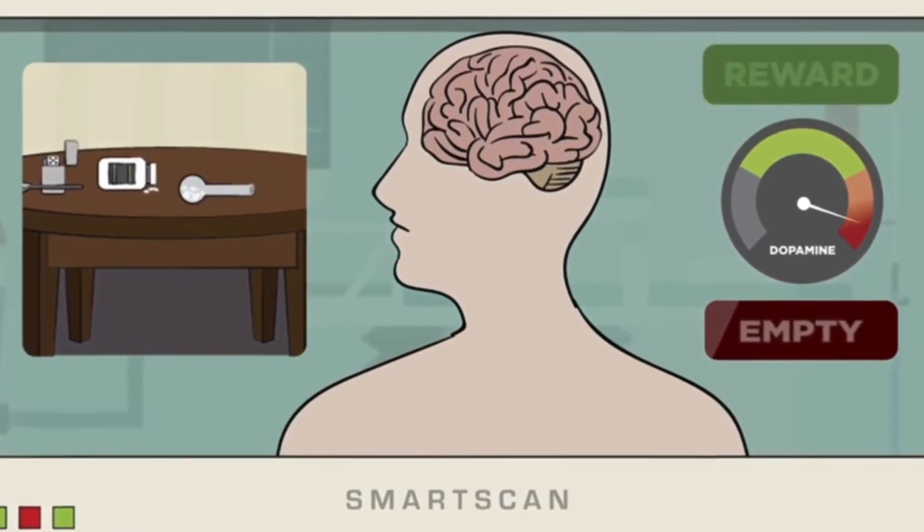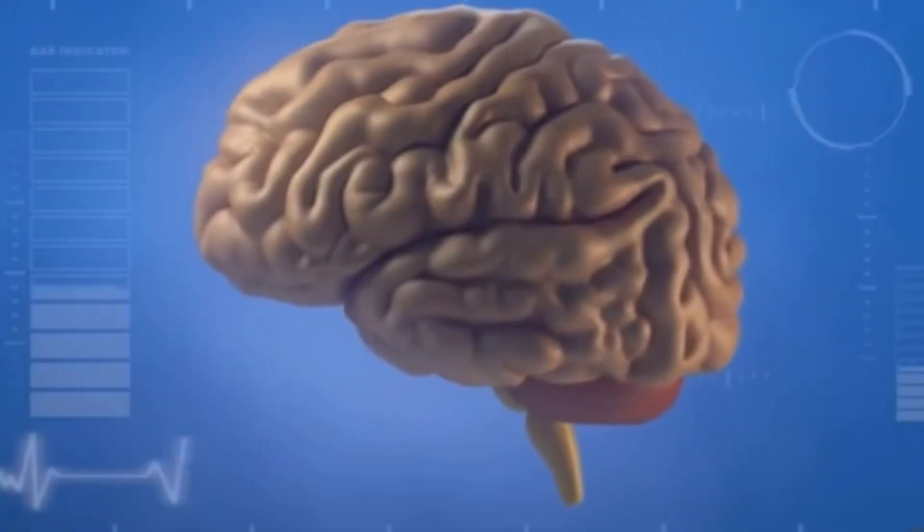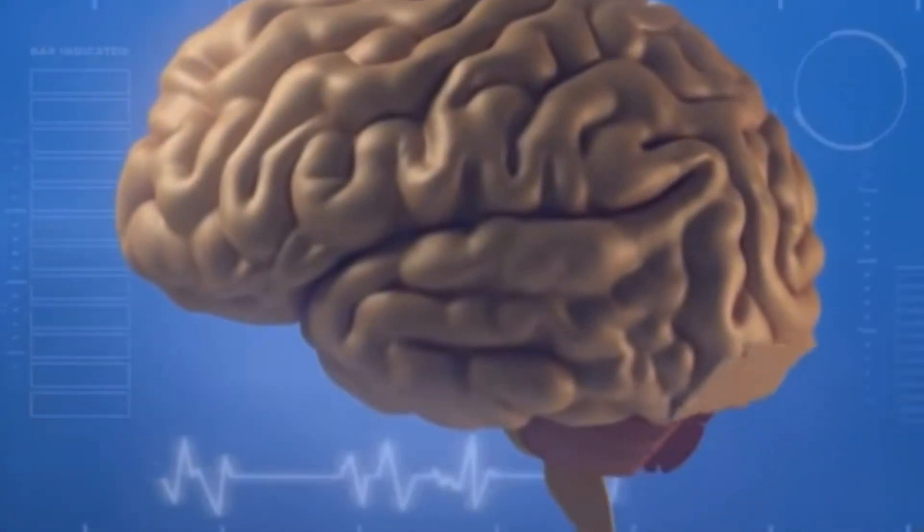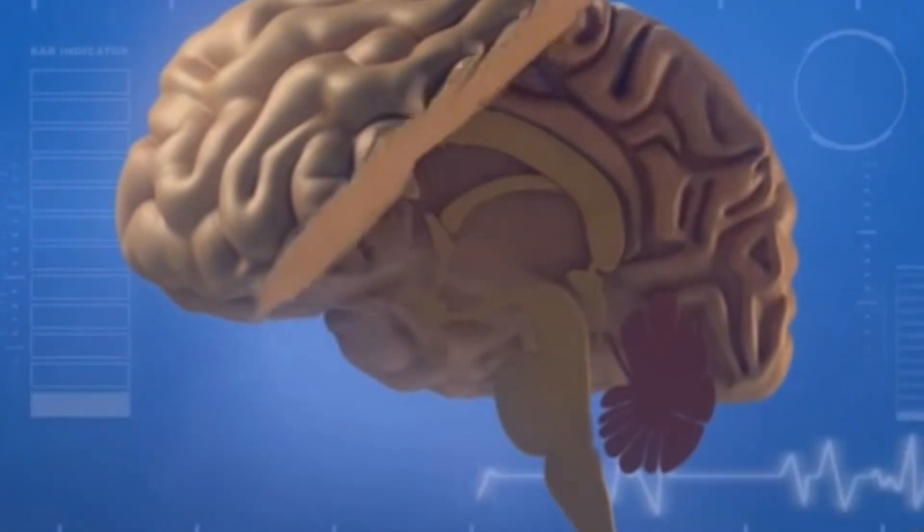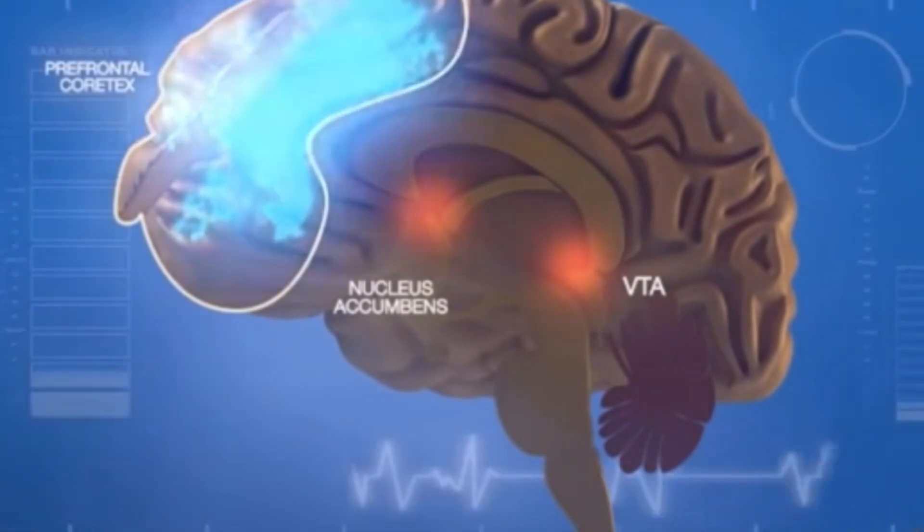These feelings don't last and are usually followed by a nasty comedown. To understand the complexities of addiction and its neurobiology, it's important to understand the brain's reward pathway. Information travels through the VTA area, to the nucleus accumbens, to the prefrontal cortex.